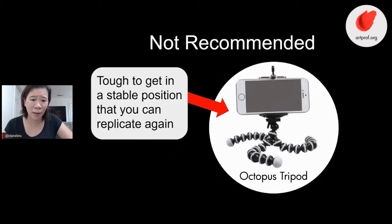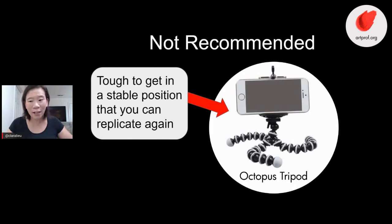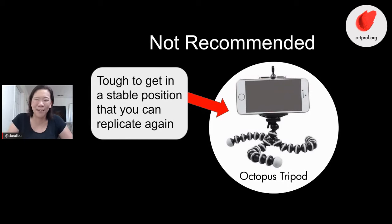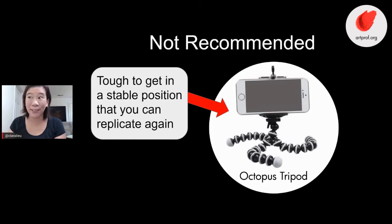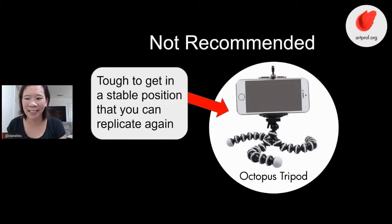Don't get one of these octopus tripods — these are the worst. I know people look at them and think, wow, look at how flexible that is. But you'll never get it in the same position ever again. The thing about my rubber band and webcam is I can set it up the exact same way every time. The octopus tripod is like trying to rebuild a Lego building from scratch with no plans — it's just a nightmare. I really don't recommend it.